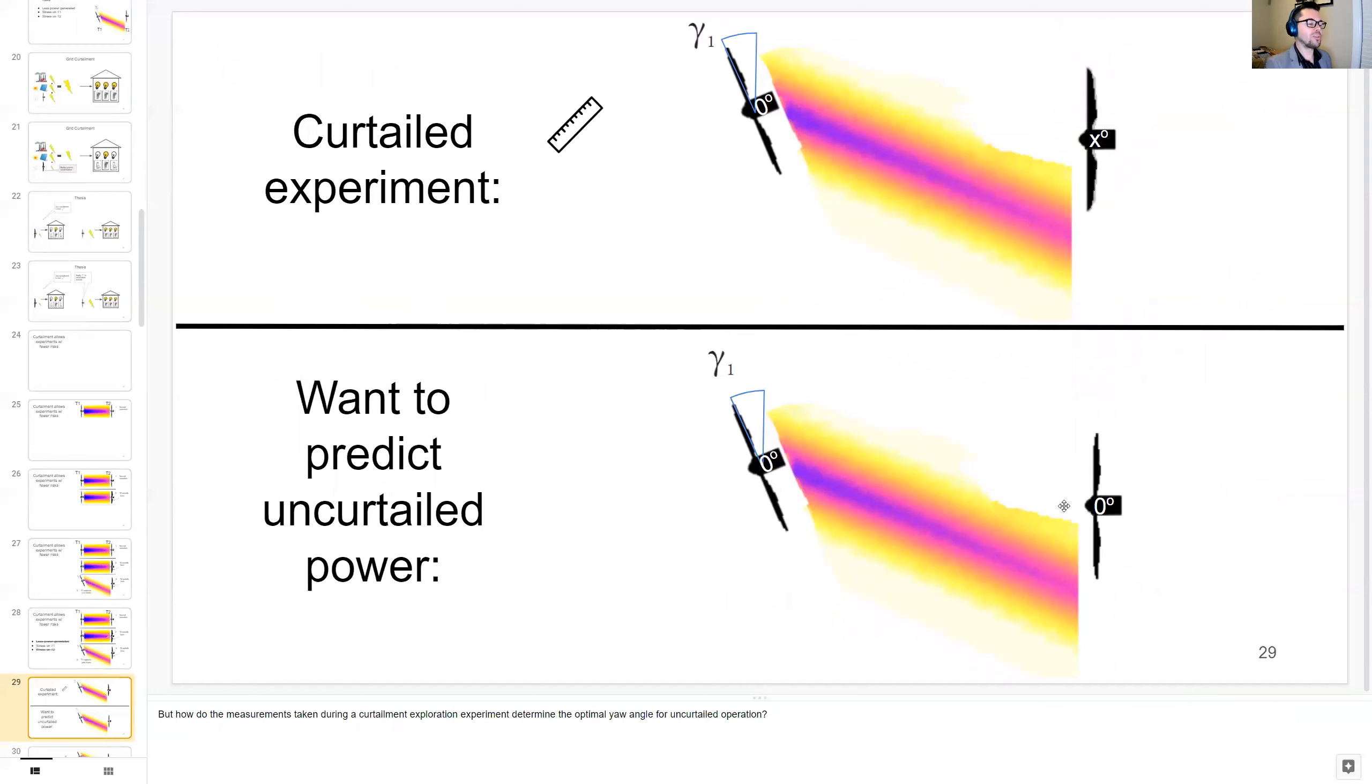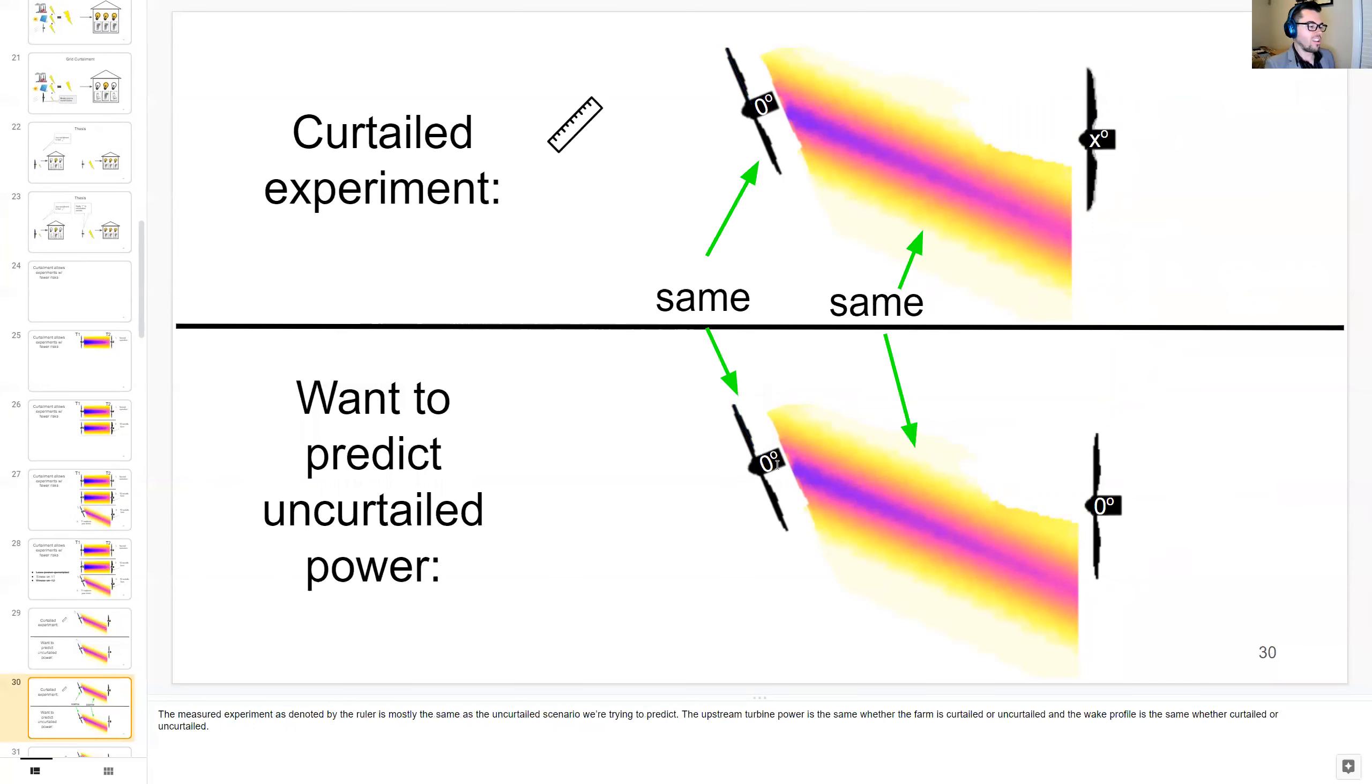But how do the measurements taken during curtailment exploration experiment determine the optimal yaw angle for uncurtailed operation? The measured experiment is denoted by this ruler at the top, and it's mostly the same as this uncurtailed scenario we're trying to predict. The upstream turbine is the same whether the farm is curtailed or uncurtailed, and the wake profile is the same whether curtailed or uncurtailed, so this is an important thing to note.